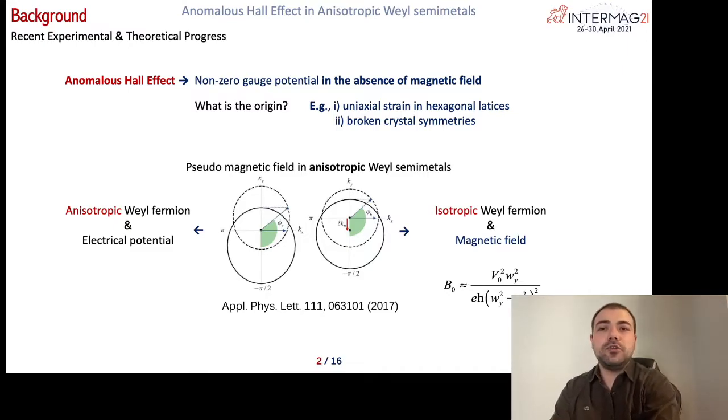We can address the anomalous Hall effect as non-zero gauge potential in the absence of magnetic field. The origin of the Hall type signals don't have to originate from the magnetic potential. For example, the uniaxial strain in the hexagonal lattices can cause gauge potential, which is often called pseudo-magnetic field. In one of our previous published papers shown here, we actually showed that anisotropy and electrical potential difference may cause transverse deflections and refractions with broken transverse symmetry.